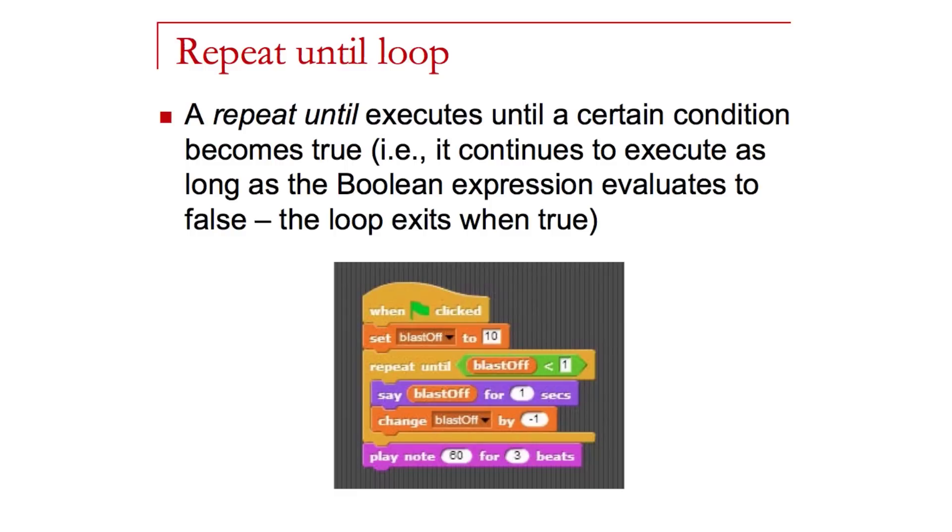As you can see here, we have a portion of code that's going to do a countdown from 10 to 1, and then at the blast-off time it will play a short sound. What I'm doing in this case is I'm setting a counter, in this case called blast-off. This is a variable that I created, and I'm using that inside of the loop, initializing it to 10. The body of the loop will continue to execute until the blast-off variable becomes less than 1.